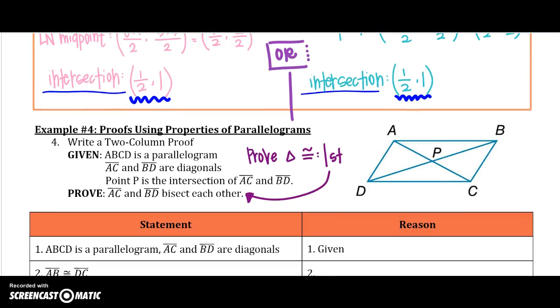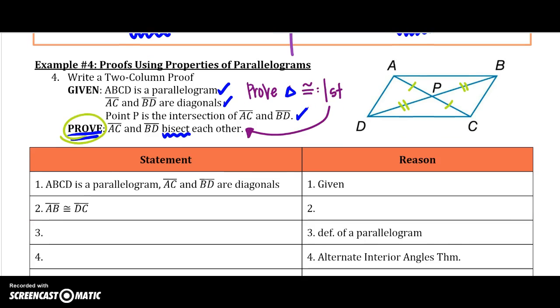Alright, and last but not least, we couldn't get out of here without a proof. So we need to write a 2 column proof. We are given that this is a parallelogram. We are given that AC and BD are the diagonals and point P is the intersection. We need to prove that these two bisect each other. Alright, and what will help us is we need to prove triangles congruent first. So remember what will get us to bisect. Bisect means cuts it in half. So we somehow need to get to AP is congruent to CP and DP is congruent to PB. If we can find that, then we can prove that they bisect each other.